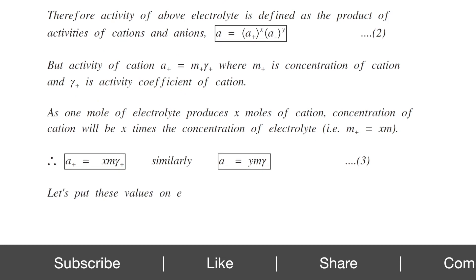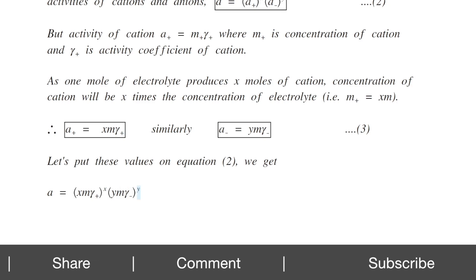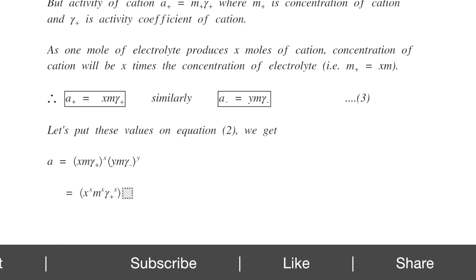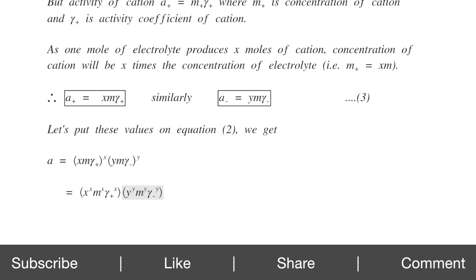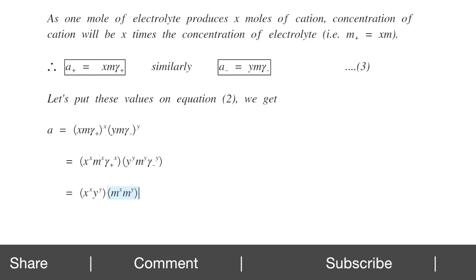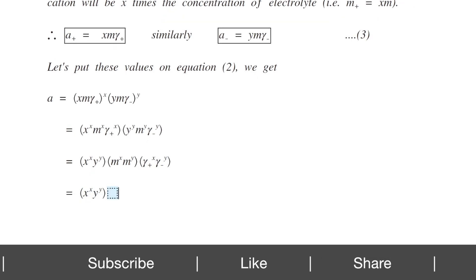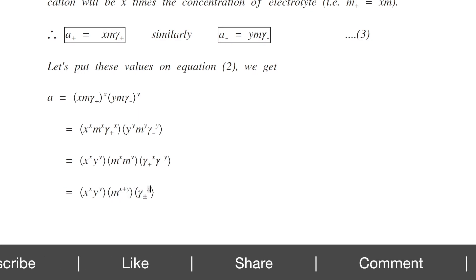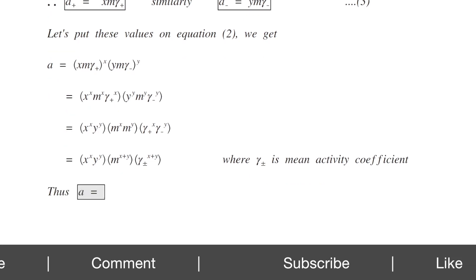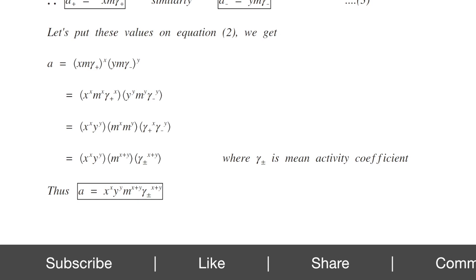Substituting these values into equation 2, we get A equals (X·M·Gamma⁺)^X times (Y·M·Gamma⁻)^Y, which simplifies to X^X · Y^Y · M^(X+Y) · Gamma±^(X+Y), where Gamma± is the mean activity coefficient. Thus, A equals X^X · Y^Y · M^(X+Y) · Gamma±^(X+Y). This is equation number 4.